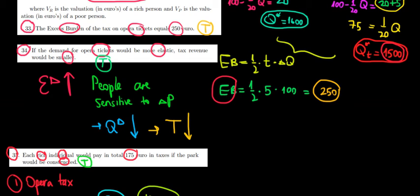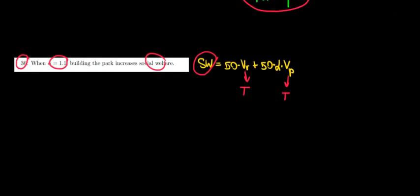We calculated that the excess burden is 250 euros for 50 rich people, because only the rich people are suffering from excess burden due to the tax on the opera tickets. Meaning that 250 divided by 50 rich people is equal to a 5 euros excess burden per rich person.